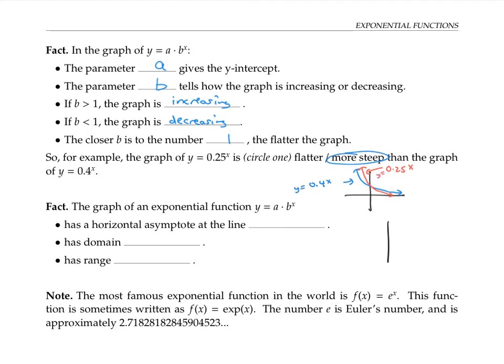For all these exponential functions, whether the graphs are decreasing or increasing, they all have a horizontal asymptote along the x-axis, in other words at the line y = 0. The domain is always from negative infinity to infinity, and the range is always from zero to infinity because the range is always positive y values.